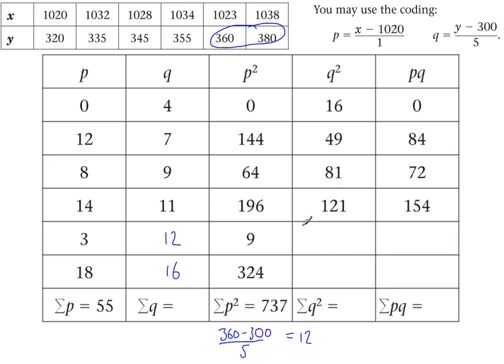Now we can just fill in all the bits of information we need, all the same sort of sums except instead of X's and Y's, it's P's and Q's. But it works just the same way. So to fill this in, obviously 12 squared is 144, 16 squared is 256, and PQ here, so 3 times 12 is 36, and 18 times 16 is 288.